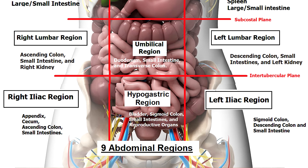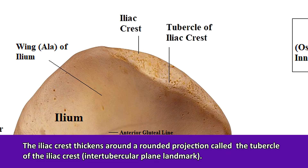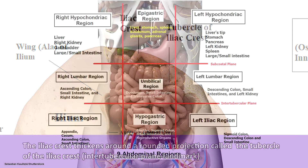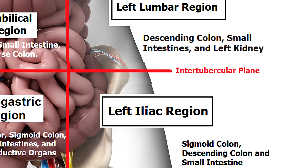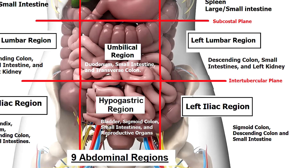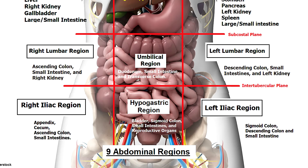The iliac crest thickens around a small rounded projection called the tubercle of the iliac crest. When we examine the nine abdominal regions, you'll notice there is an inferior horizontal or transverse plane called the intertubercular plane, named that way because this plane actually passes through the tubercles on each iliac crest.